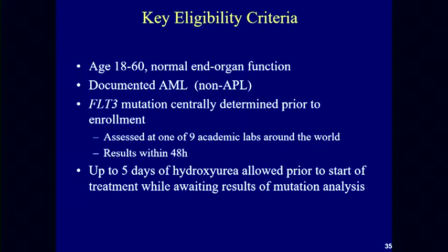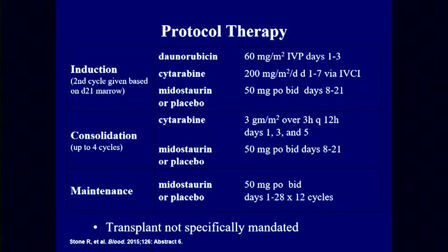The trial enrolled patients aged 18 to 59.99, with non-APL AML and a confirmed FLT3 mutation. Patients could receive hydroxyurea for up to five days while awaiting the mutation result. Standard therapy was 60 mg/m² daunorubicin for three days plus continuous cytarabine infusion, followed by high-dose cytarabine consolidation from CALGB 8525 (Mayer et al., 1994), then maintenance.